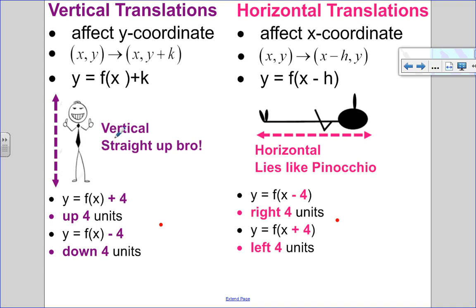In mapping notation, all my original points (x, y) become the points (x, y + k). So k is the vertical translation value. If k is positive, I'm moving up. If k is negative, I'm moving down.